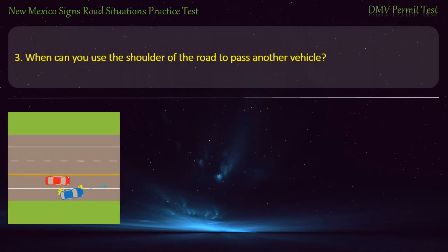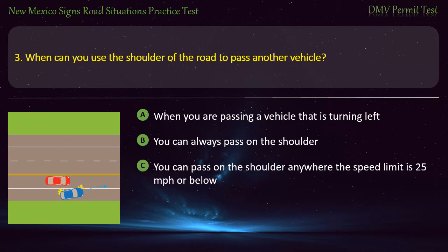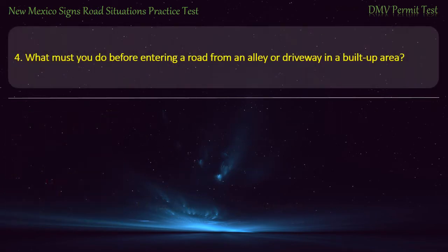Question 3. When can you use the shoulder of the road to pass another vehicle? Options: When you are passing a vehicle that is turning left; you can always pass on the shoulder; you can pass on the shoulder anywhere the speed limit is 25 mph or below; or you cannot pass using the shoulder. Answer: When you are passing a vehicle that is turning left.